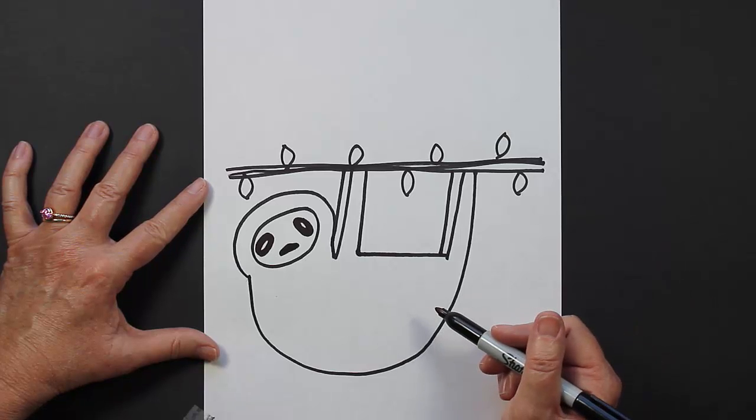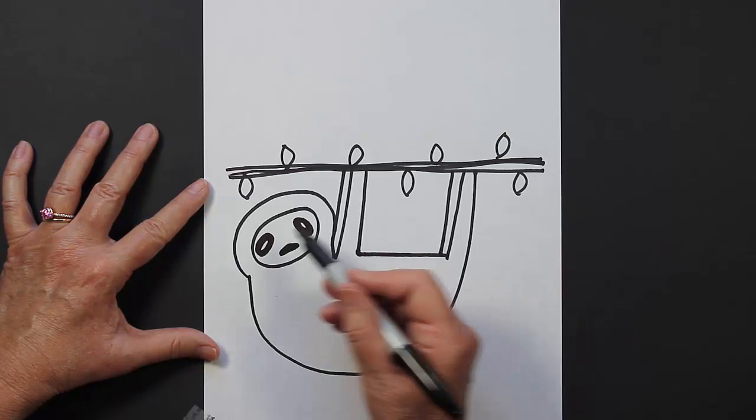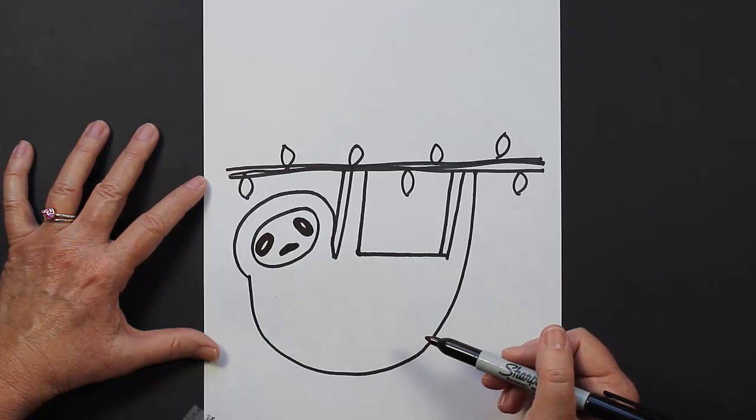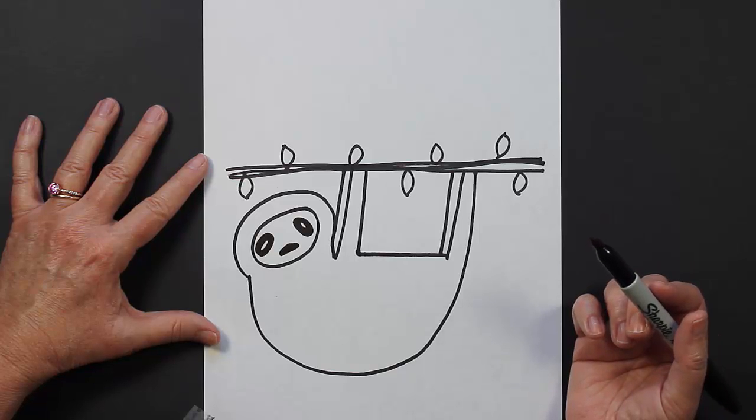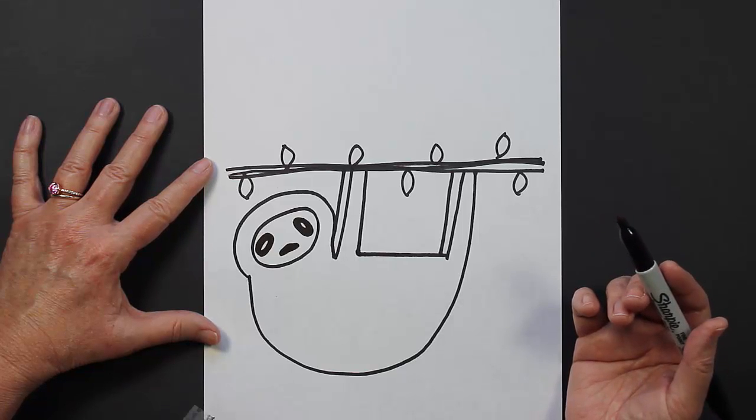So that's a very simple sloth. What you can do is create more markings on him. You can color or paint him. So there you go. There's your sloth. I hope you like this lesson. I'll see you in the next video.